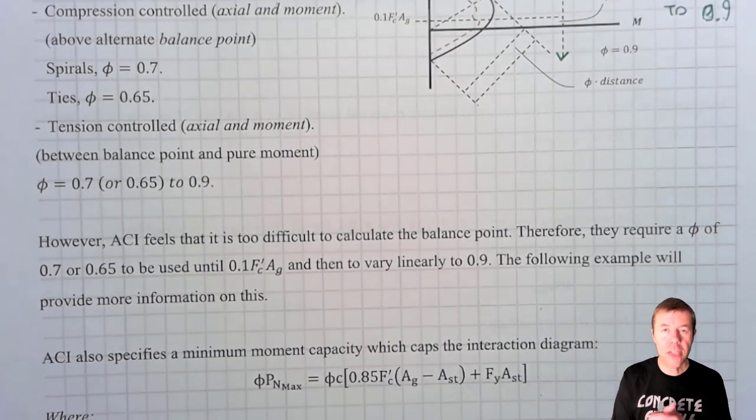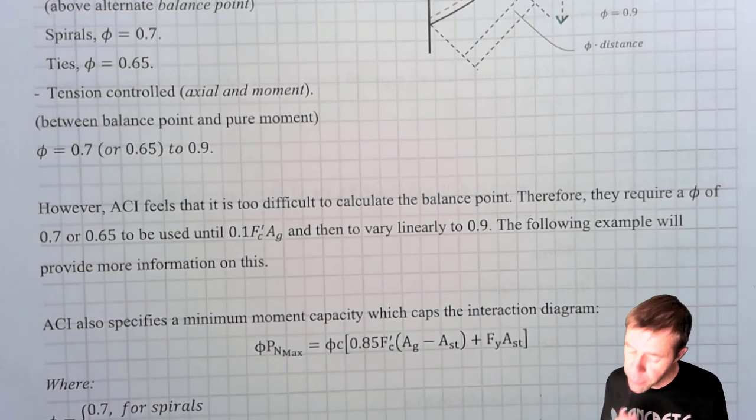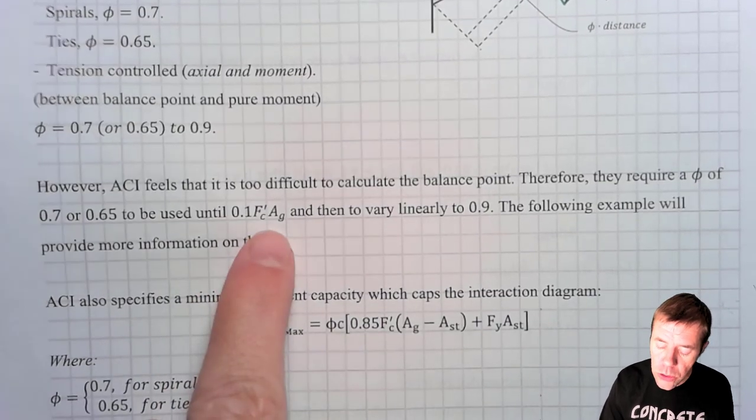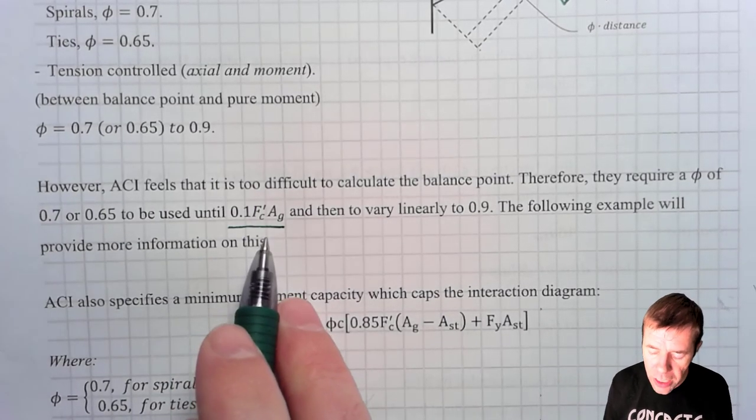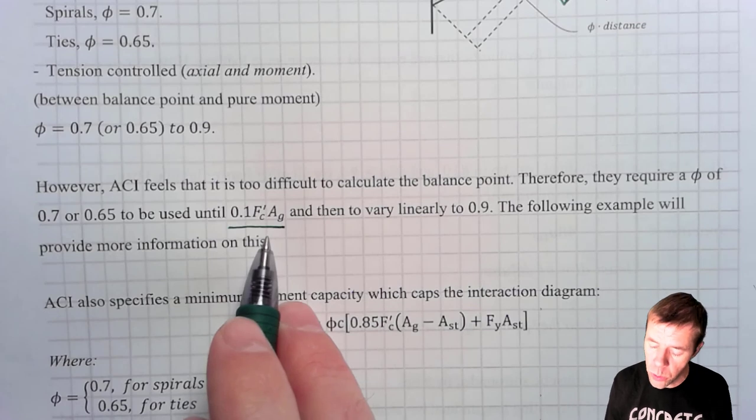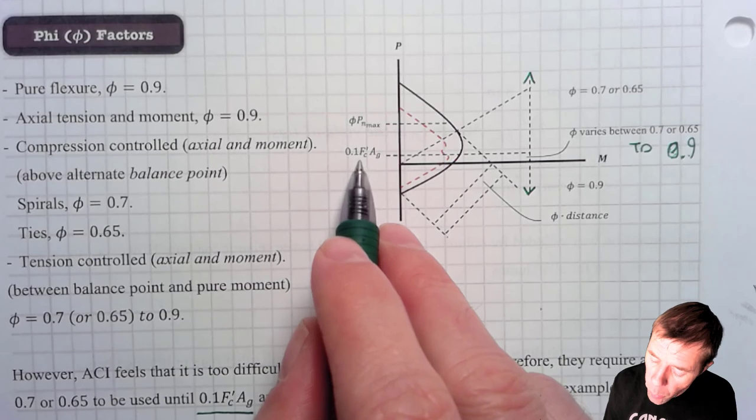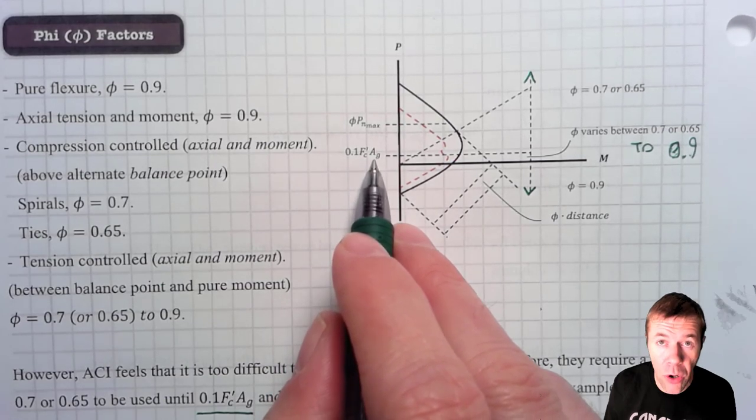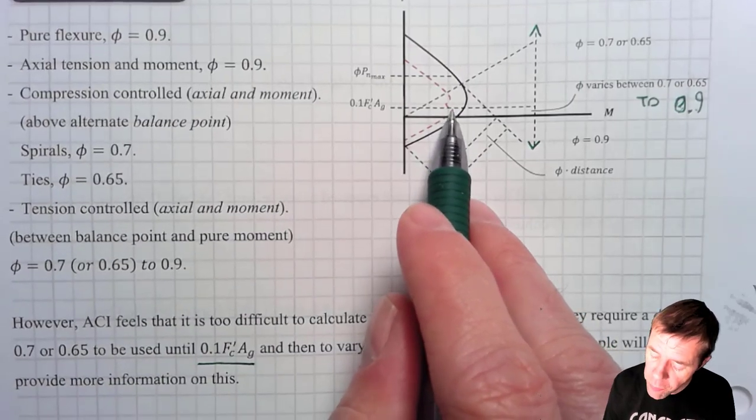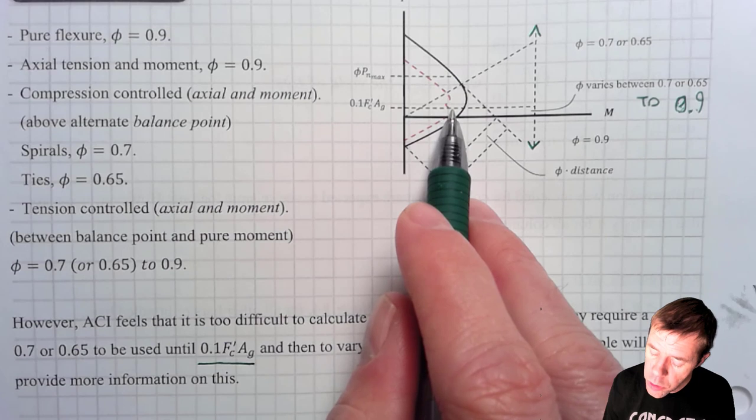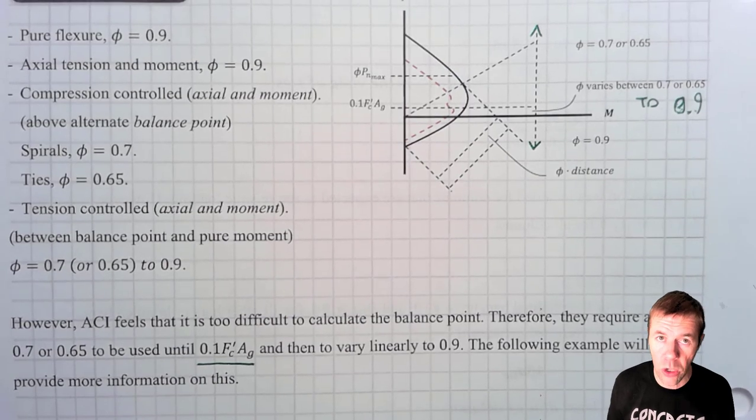Now, ACI, though, they've tried to make your life a little bit easier. They think it's kind of challenging to find the balance point. So what they did instead is they said, we're going to use 0.1 times f prime c times ag, and that is going to tell us where our balance point at, where our critical balance point is. So this tip, this very tippy point is 0.1 times f prime c times area of gross. That's where this magical point is right here. And again, anywhere below this, it's going to vary from 0.7 to 0.9 or 0.65 to 0.9 linearly, depending on if you have ties or if you have spirals.